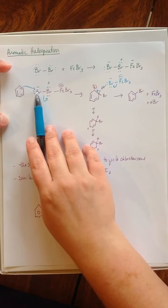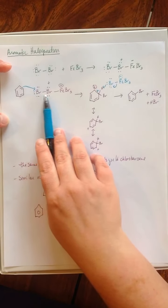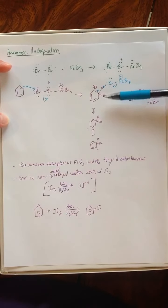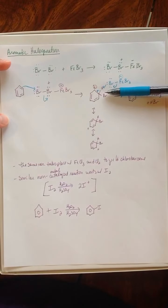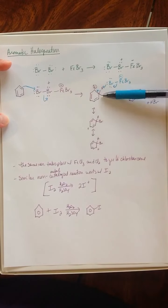So electrons come over from our benzene and react with that bromine. That way that guy leaves. And we end up with the same type of state that we just talked about. And you'll see this over and over again.